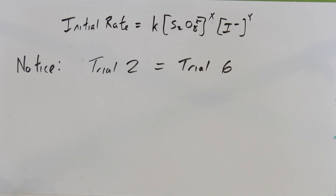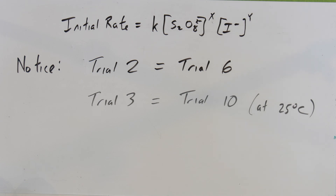A few things to note about duplicated trials. Trial two is the same as one of the trials in the second set — specifically, trial two and trial six are identical. This is useful because we often split the data over multiple groups. If those two don't come out very close together, somebody is doing something wrong, since they have exactly the same concentrations. It's a built-in troubleshooting check.